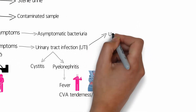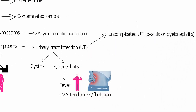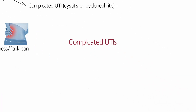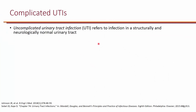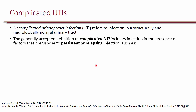UTIs can also be considered uncomplicated or complicated — for example, there is uncomplicated cystitis or complicated cystitis. Uncomplicated UTI refers to infection in a structurally and neurologically normal urinary tract. With a normal urinary tract, both anatomically and neurologically, you have normal urine flow, which typically clears the tract — even if there are occasional bacteria, urine flow washes them out. Complicated UTI is generally defined as UTI in the presence of factors that predispose patients to persistent or relapsing infection. These include foreign bodies — most importantly indwelling catheters — as well as obstructions, immunosuppression, renal failure, renal transplantation, and urinary retention from neurologic disease.